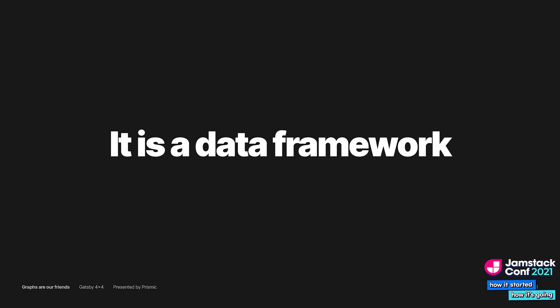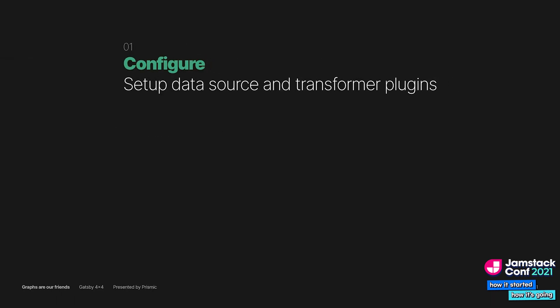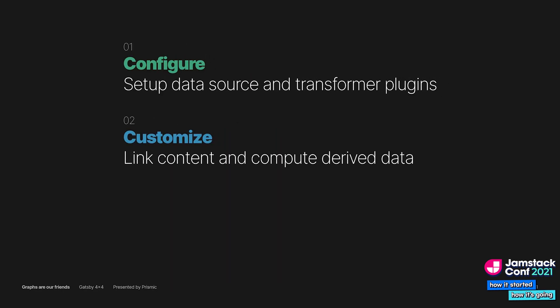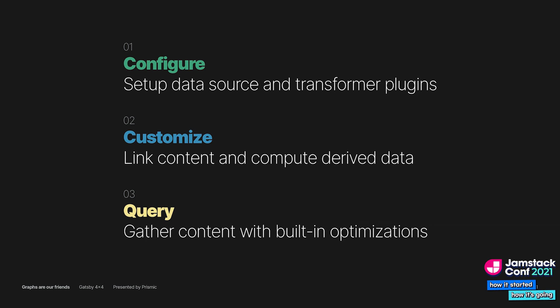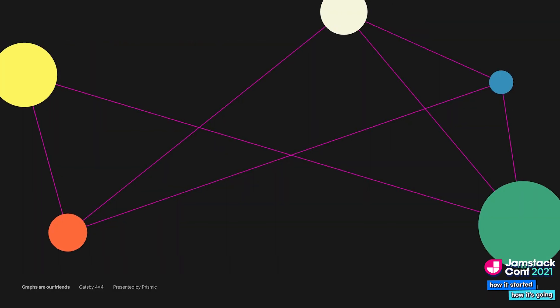Gatsby's GraphQL API is more than just an alternative API — in essence, it's a framework around your data. Using it can be broken down into three steps: first, configure the API with data sources and transformer plugins; next, customize the graph to link content and compute derived data; and last, query the API to gather content with built-in optimizations. This data framework is unique to Gatsby. Thinking of content as parts of a larger graph will reveal how powerful Gatsby really is — try it, you might find it to be quite a friendly API.